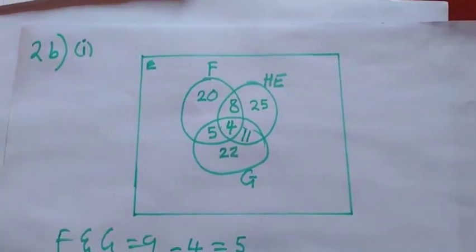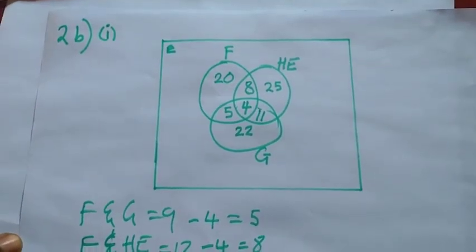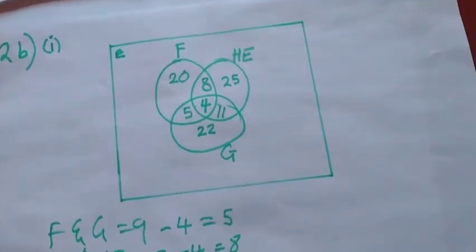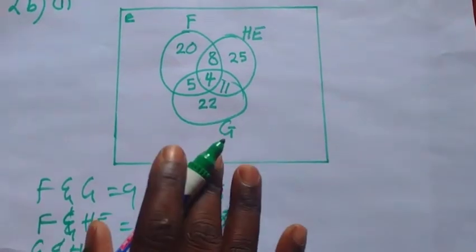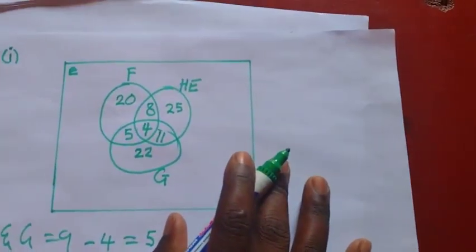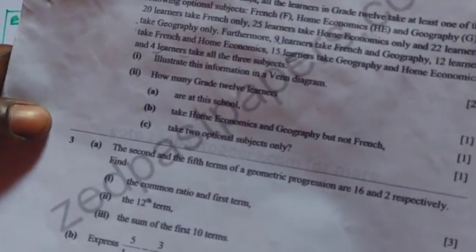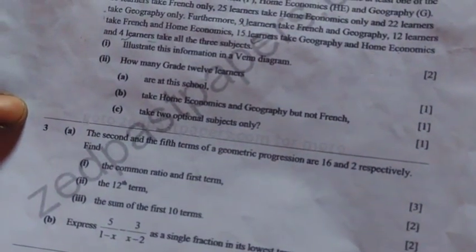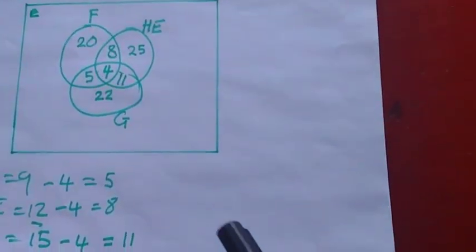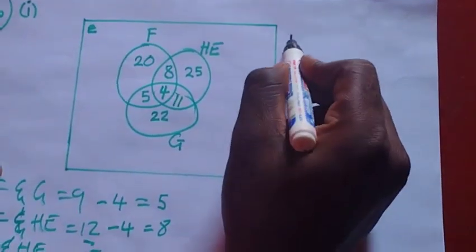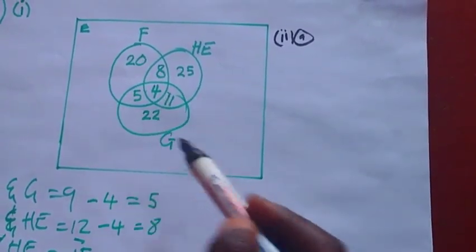Now let's answer the remaining questions — Roman numeral 2, questions A, B, and C. We start with question A: how many grade 12 learners are at this school? In order to find the total number, we are going to add all the values in the Venn diagram together.